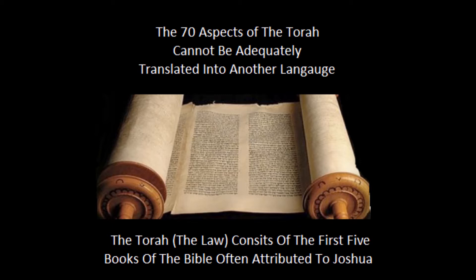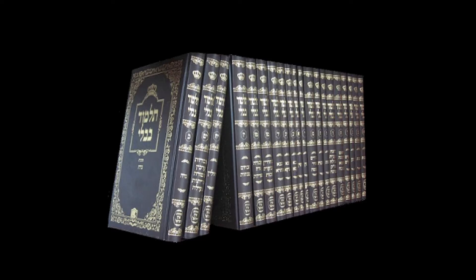That's why they say that the Torah has 70 facets or faces. Also, it's important to note that at one point there were 70 scholars that actually determined what was in alignment with the Torah law and what was not.